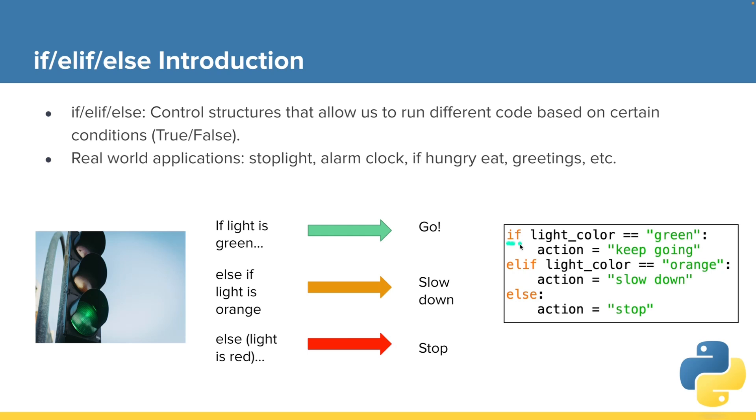So if, that's a different color because it's a reserved keyword. The light color variable, we'll assume we have a light color variable defined up here in our program somewhere. If the light color equals green, then keep going. We'll set that action variable, assuming that's defined in our program.